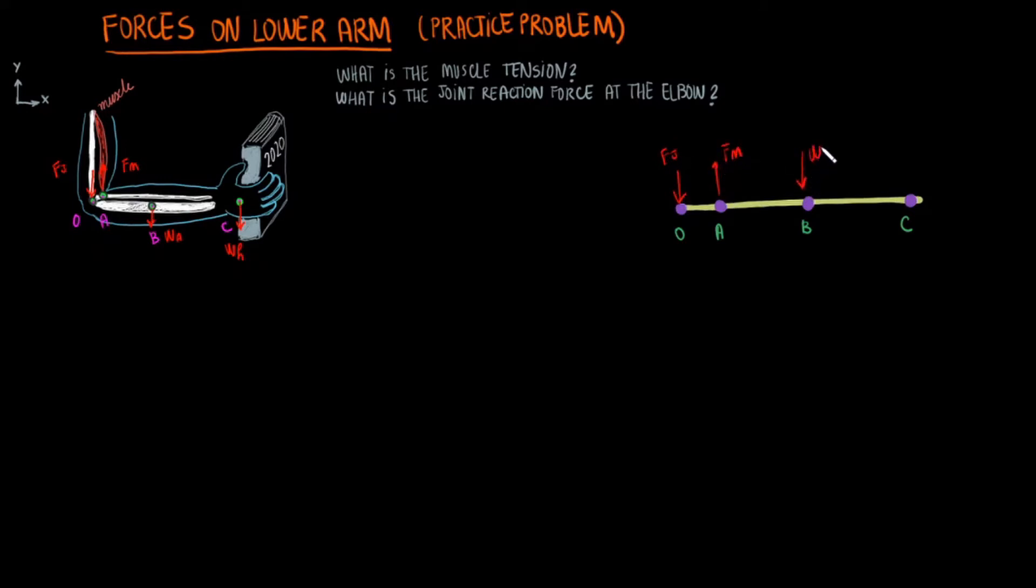What we are now missing from the diagram is the distance between these forces. We can assume these distances are little a, little b, and little c. A would be around 4 centimeters, b around 15 centimeters, and c around 35 centimeters. For completion, let's assume some average values for the weights: 20 newtons for the lower arm weight, wa, and 80 newtons for the hand weight, wh.